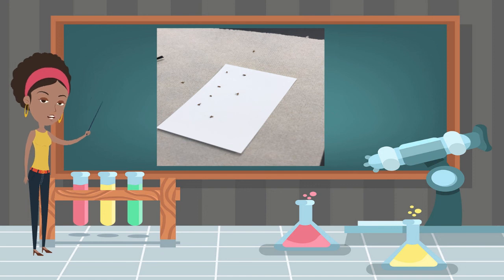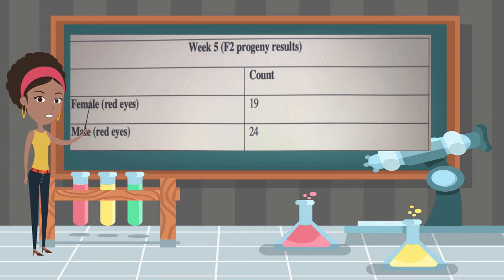F2 progeny during week five. 19 females with red eyes. 24 males with red eyes. Week five pictures of F2 progeny.